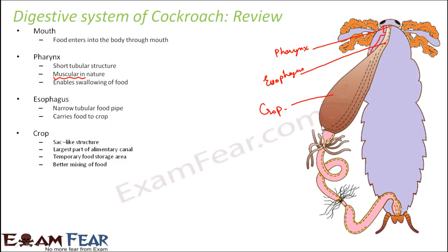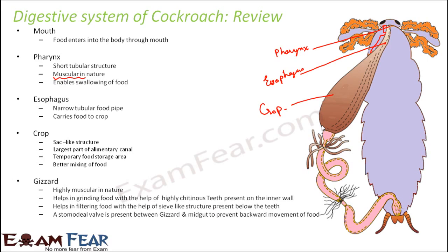The crop also ensures better mixing of food. When we eat food, it is solid and we chew it with teeth to break it into smaller pieces. It then passes through the pharynx where mucus makes it soft, and then it enters the stomach. Similarly, in cockroach, the crop helps break down food into a simpler form before it moves to the gizzard.